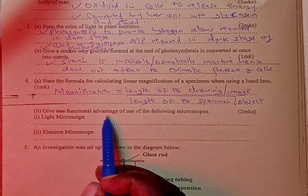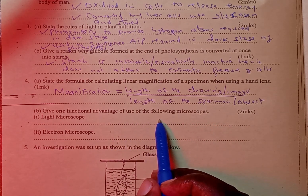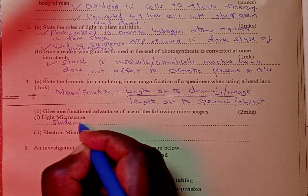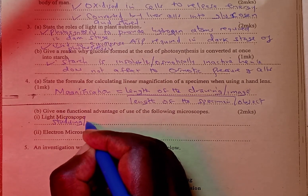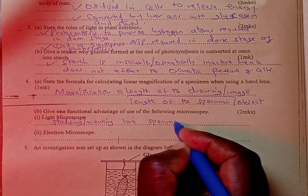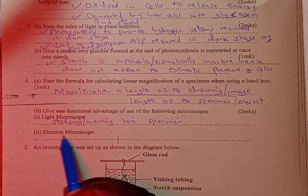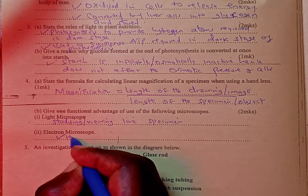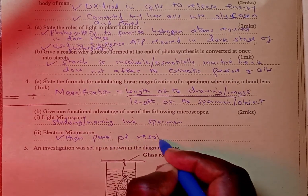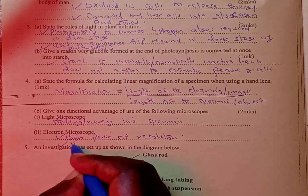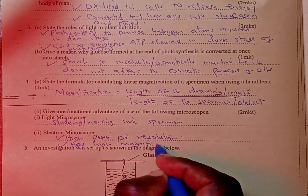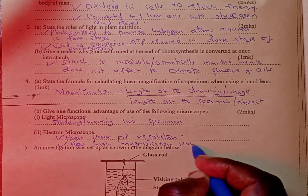Part B: give one functional advantage of the use of the following microscopes. Number 1, light microscope — the advantage is that it can be used for viewing live specimens. Then the advantage of using an electron microscope is that it has high power of resolution and also has high magnification power.